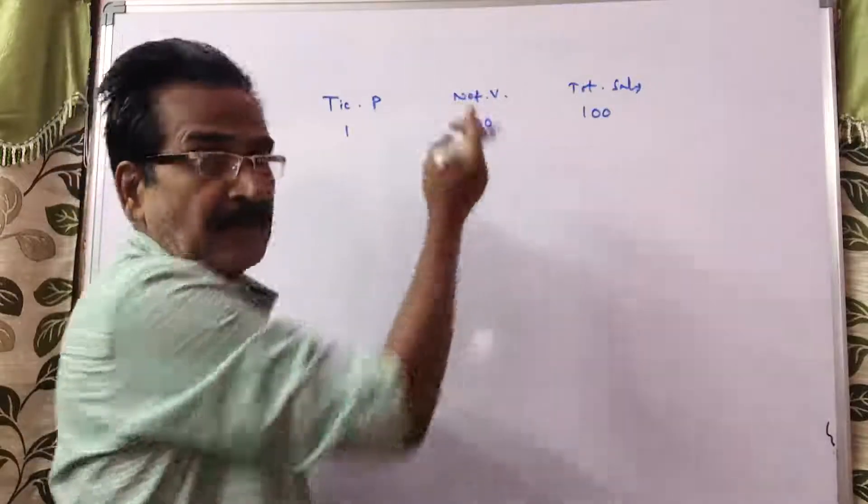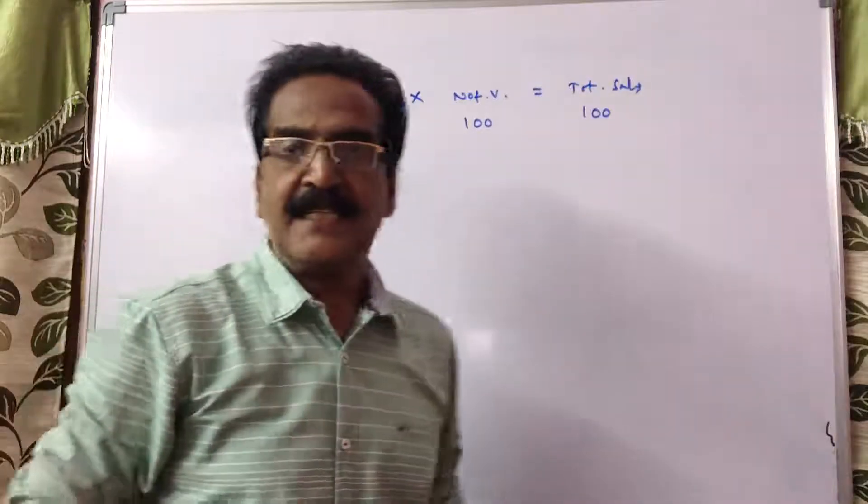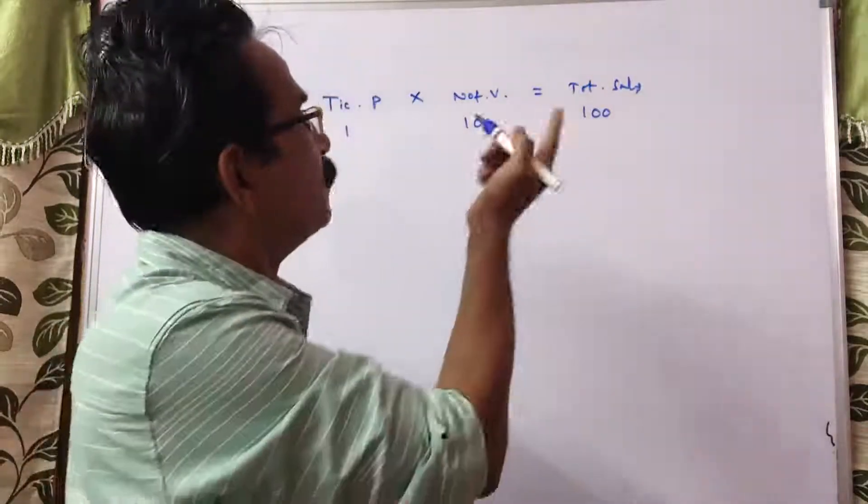Okay. Ticket into number of visitors is equal to total sales. Each ticket into number of visitors is equal to total sales.